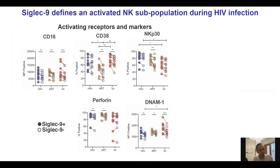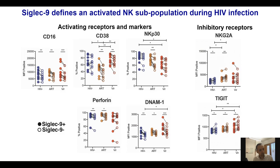We started exploring this alternative hypothesis — that Siglec-9-positive NK cells are actually more activated and more cytotoxic against HIV-infected cells compared to Siglec-9-negative cells. We did this by simply measuring the expression of several NK activating and inhibitory receptors on the surface of Siglec-9-positive cells compared to Siglec-9-negative cells, using cells isolated from HIV-uninfected individuals, HIV-infected individuals on therapy, or HIV-infected individuals not on therapy. The expression of several NK activating receptors and markers, including CD16, CD38, NKB30, perforin, and DNAM, are higher on Siglec-9-positive cells. Conversely, expression of inhibitory receptors like NKG2A and TIGIT are lower on Siglec-9-positive cells, regardless of HIV disease status.